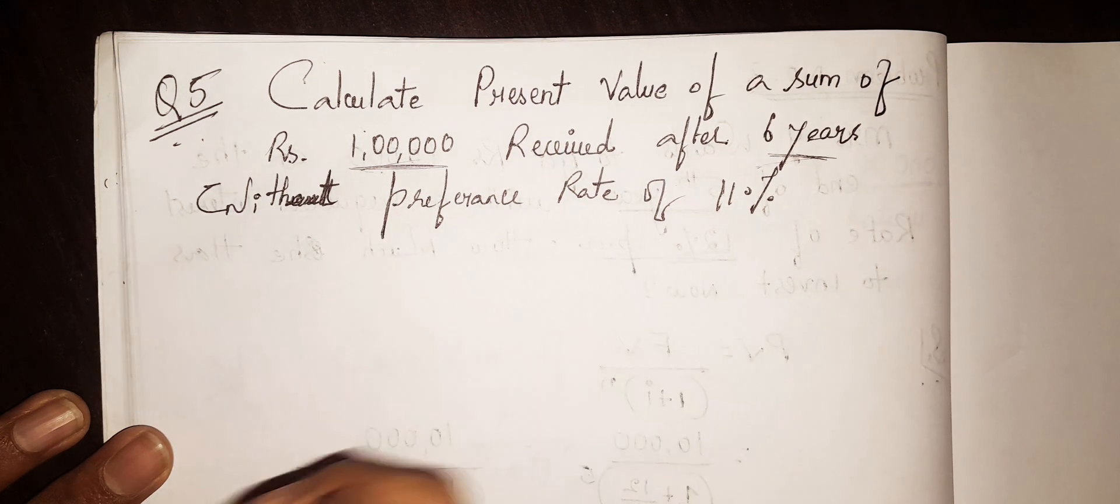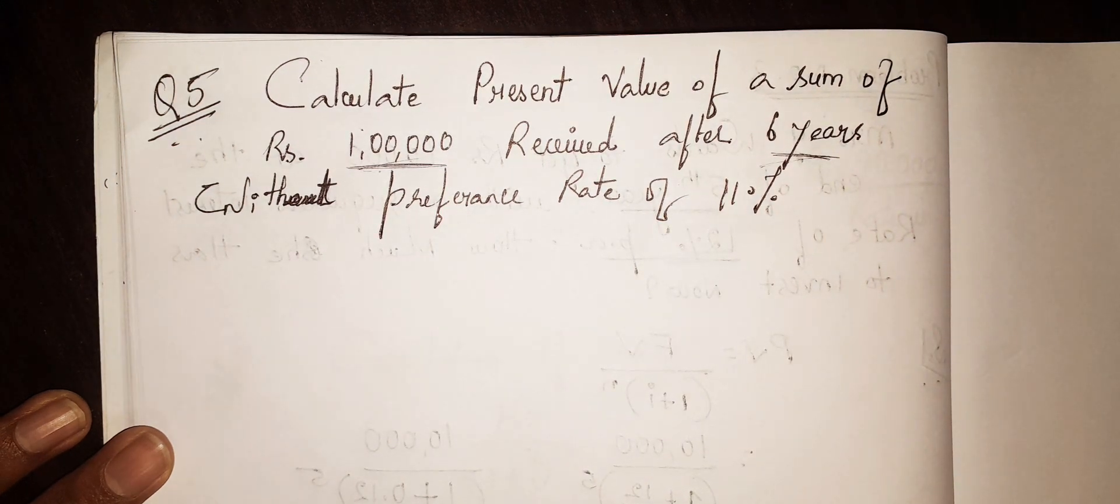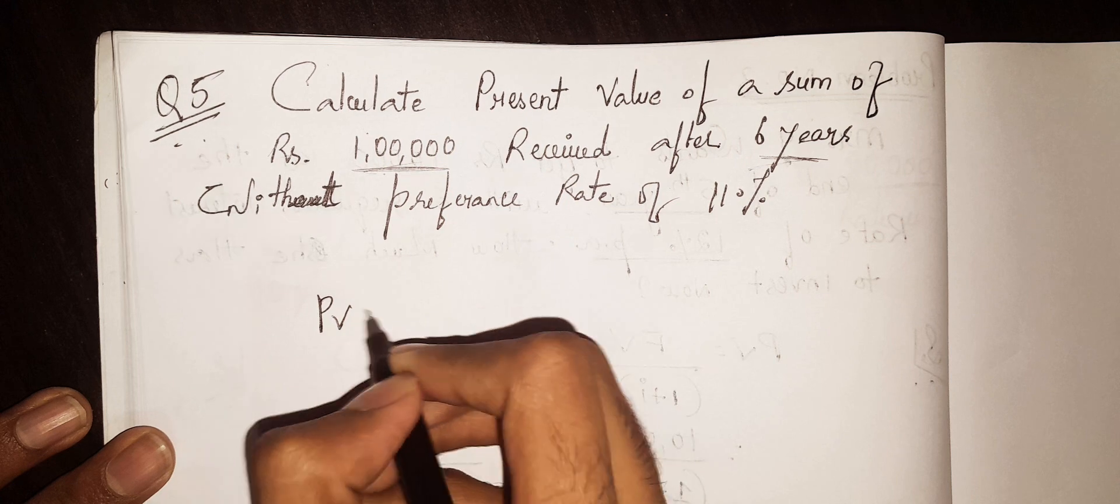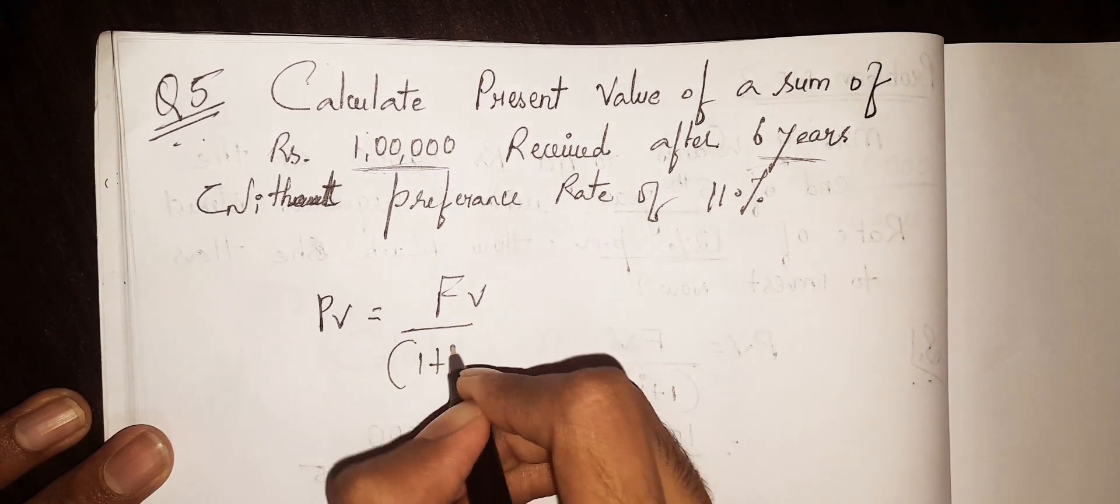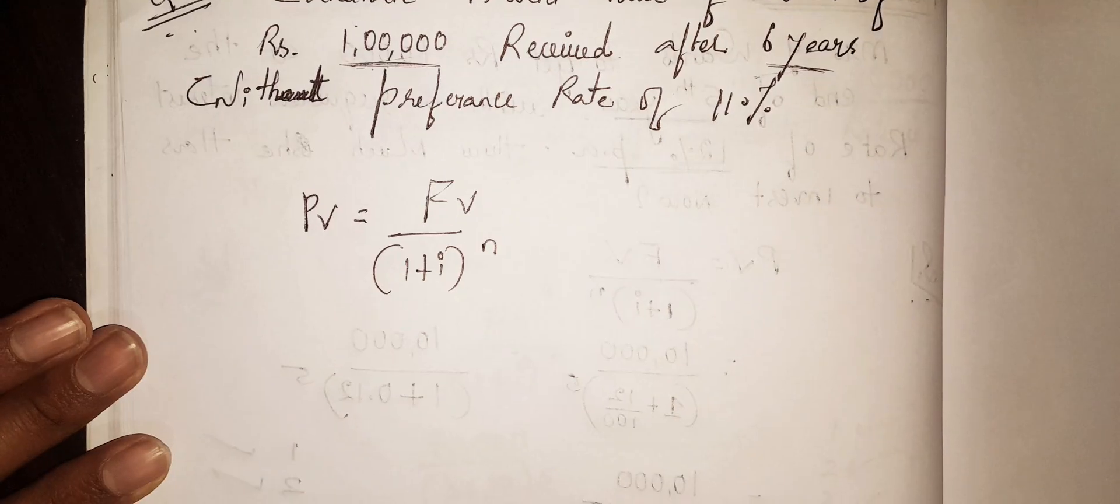If you want to receive this amount, the formula is: present value equals future value divided by 1 plus i to the power of n.